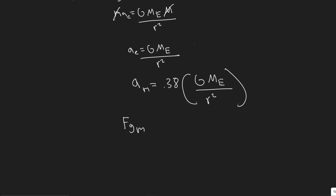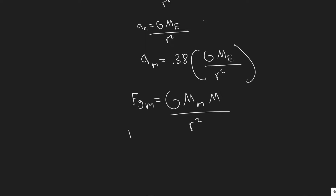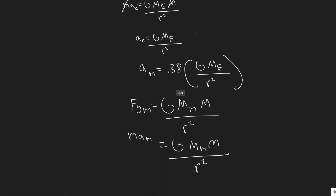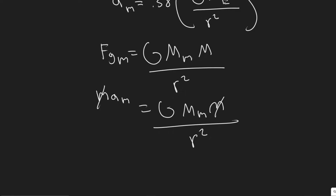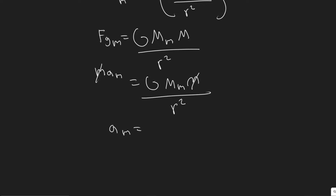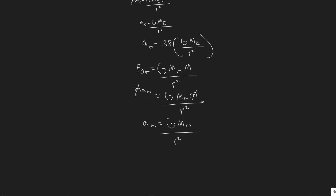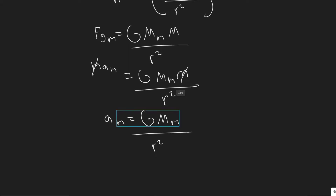The force due to gravity on Mars is equal to G times the mass of Mars times the mass of our object, divided by R_M squared. Once again, F equals M·A, so the mass of the person times the acceleration on Mars equals G times the mass of Mars times the mass of the person divided by the radius squared. The masses cancel again, giving us the formula for the acceleration due to gravity on Mars: G·M_M divided by R_M squared.